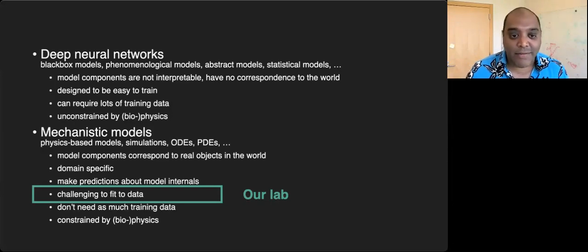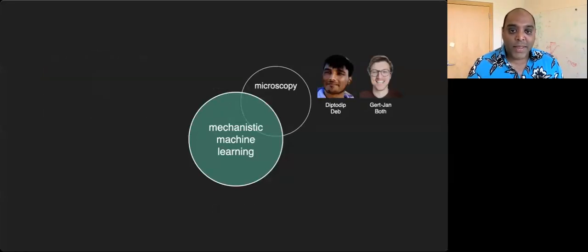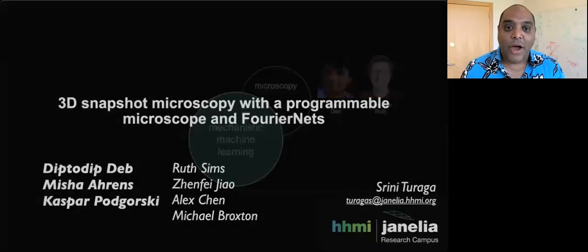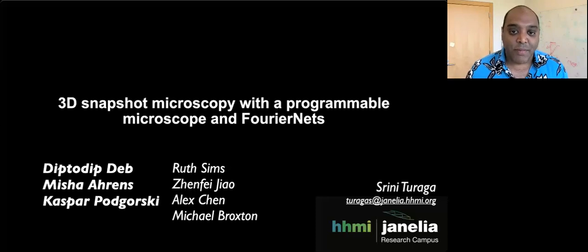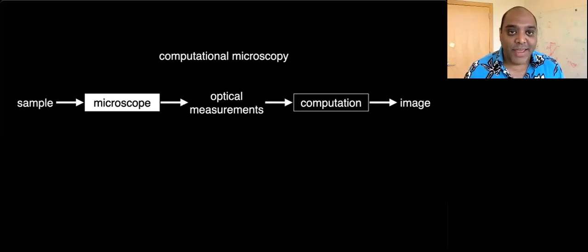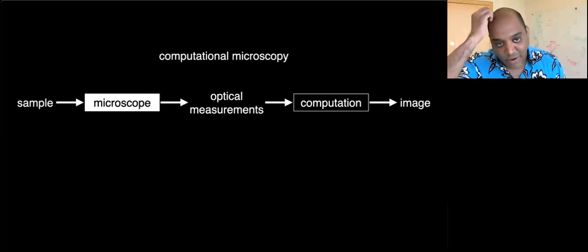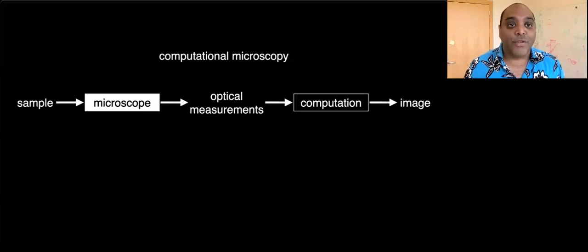Today I'll tell you about two stories: one in neuroscience and one in microscopy. The microscopy work is about doing 3D snapshot microscopy with a programmable microscope. This is a new kind of microscope we built, and we had to design a new neural network architecture called a Fourier net to do this. In computational microscopy, you have a sample you're trying to image, your microscope gives you optical measurements, and then you have to do a lot of computation on those measurements to generate an image.